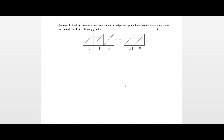In this video we will discuss how to find the number of vertices, number of edges, and some topological indices of a graph structure. First, we understand the question: find the number of vertices, edges, and general sum connectivity and general Randić index of the following graph. This graph looks simple, but using this technique we can find the topological indices of different structures. Let's start with the solution.